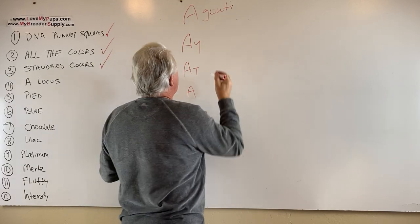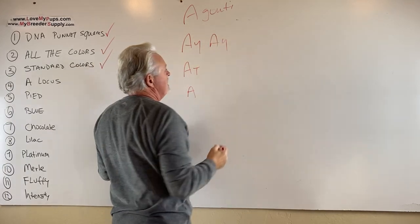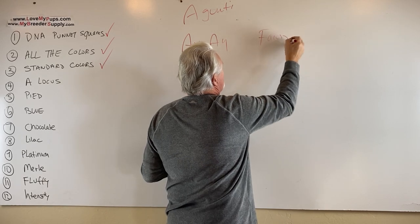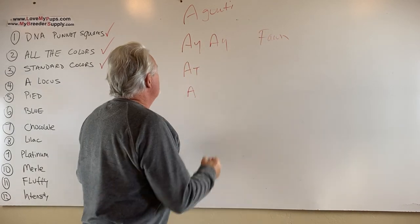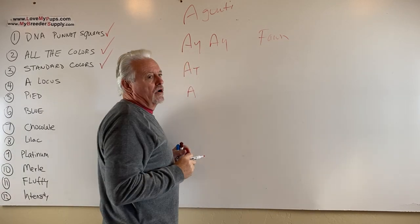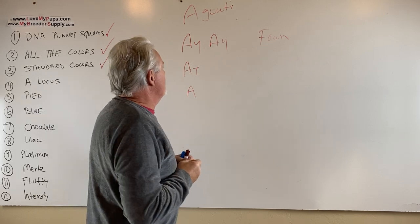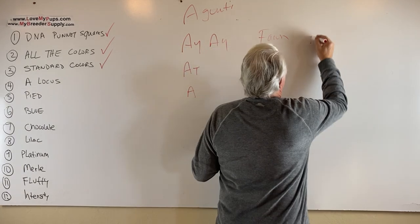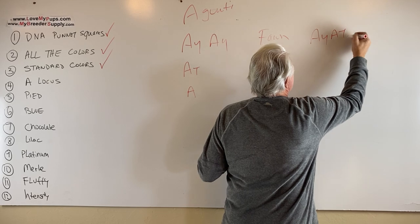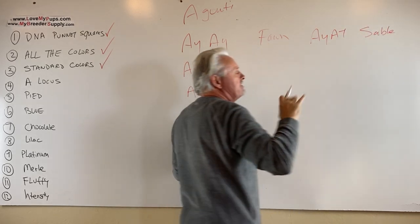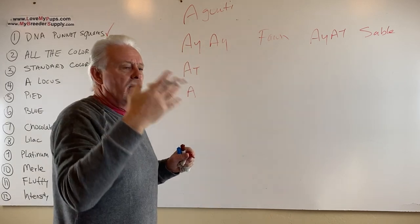So if you get an AYAY dog, that basically is going to be a fawn dog. If you get an AYAT dog, it's still a fawn dog, but it's likely to show what we call sable. If you end up with an AYAT, the AT shows up a little bit and you end up with a sable dog, where it has different variations of color throughout the hair.